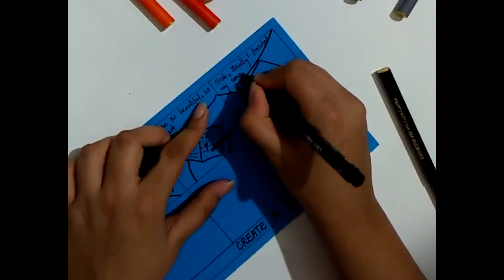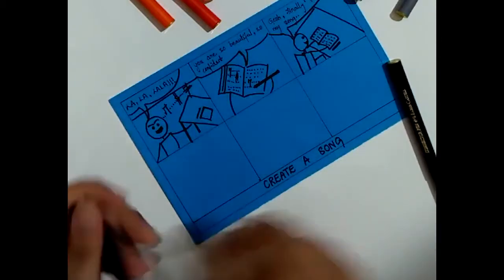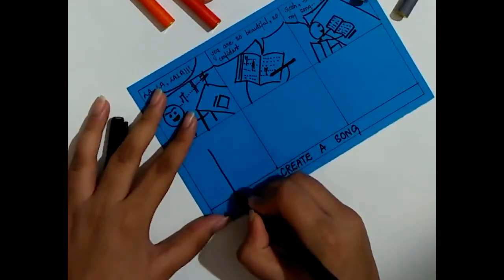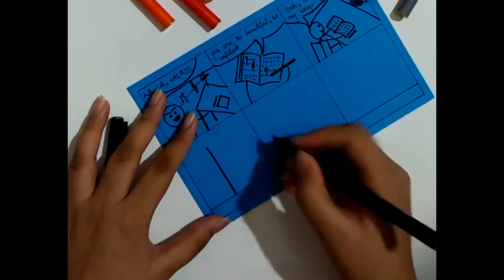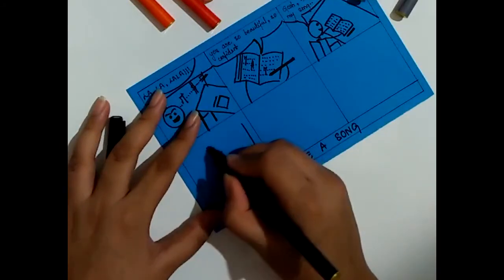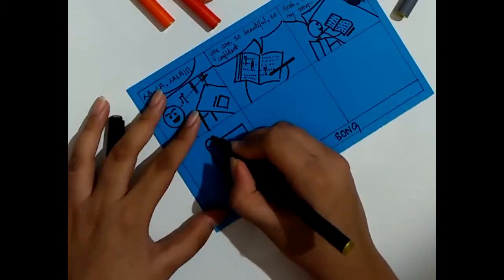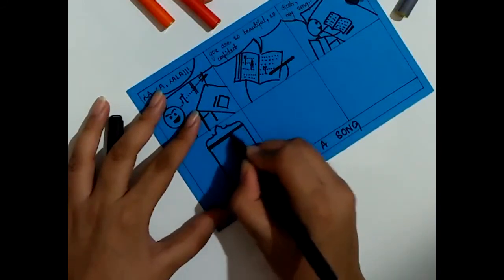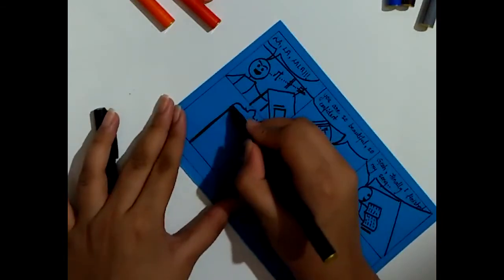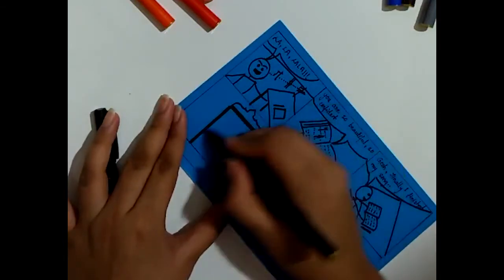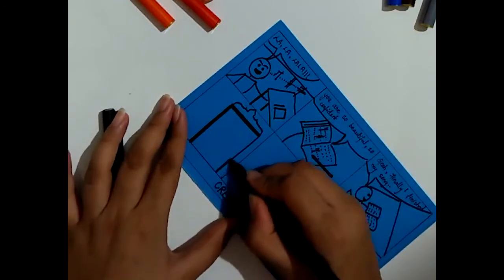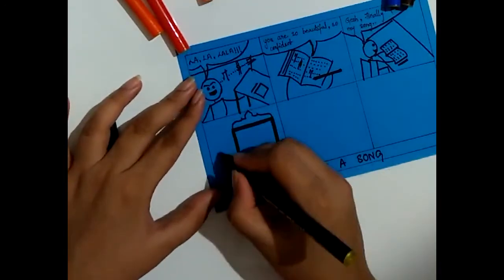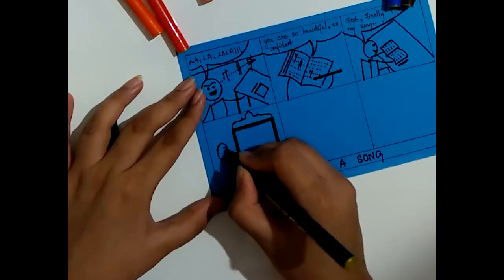Next we will depict a scene where he is trying to sing the song in front of a mirror. So I'm just drawing a mirror. Thick borderline. A person who is standing outside the mirror singing.